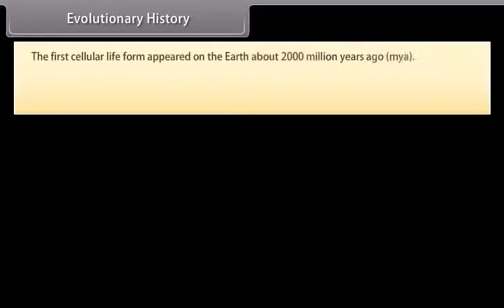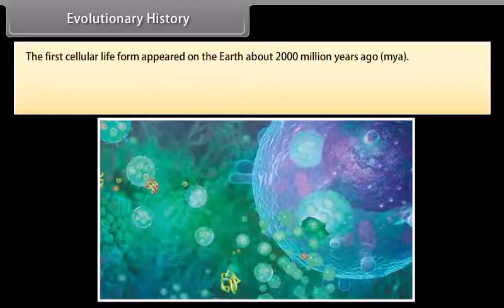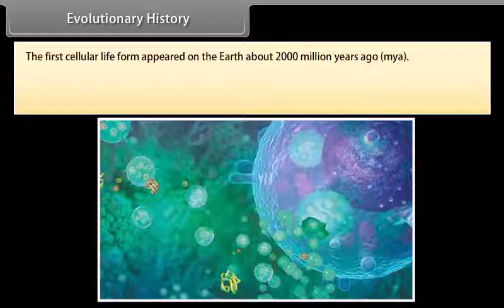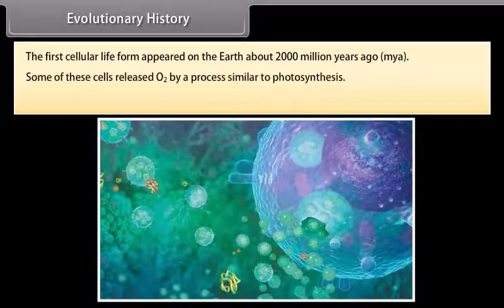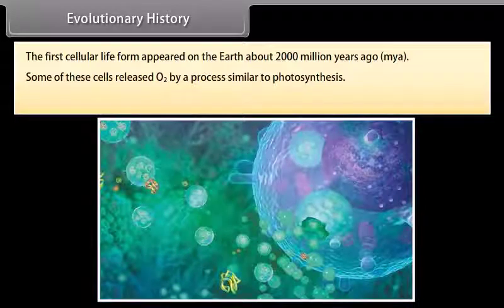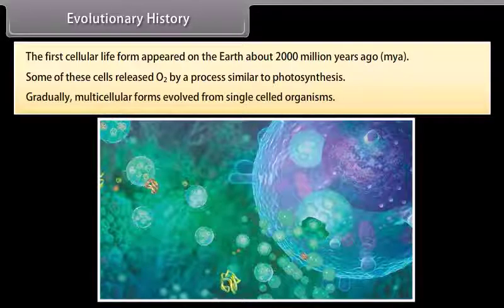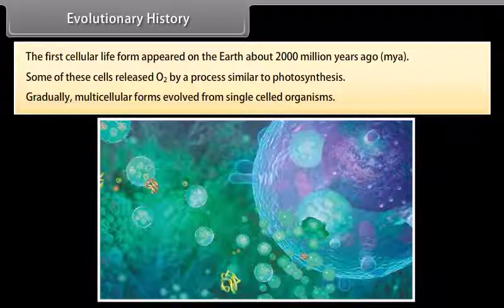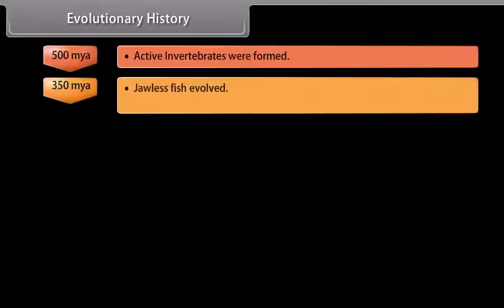The first cellular life forms appeared on earth about 2,000 million years ago. Some of these cells released oxygen by a process similar to photosynthesis. Gradually, multicellular forms evolved from single-celled organisms, and evolution can be traced from that point forward.